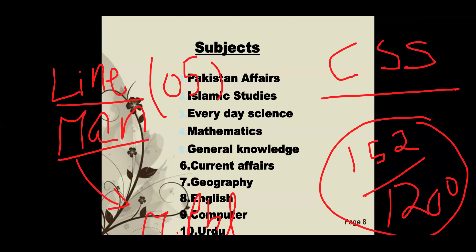He scored 152 out of 1200 in total — failing all subjects. I told him: motivation doesn't mean just applying; you have to study too. You need to read 4 to 6 hours daily for even a one-paper exam. You can't just appear in the exam with excitement and expect results — the key to cracking competitive exams is consistency.